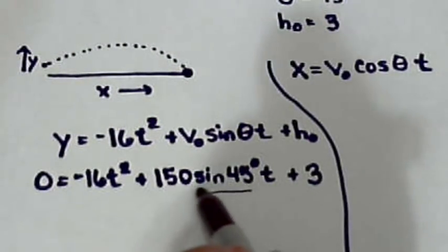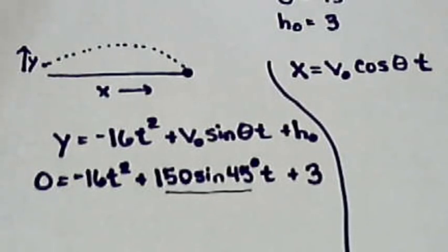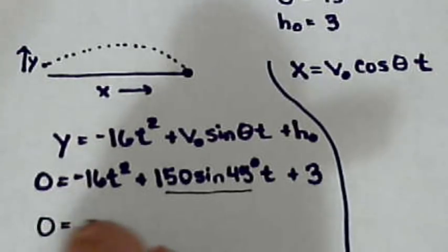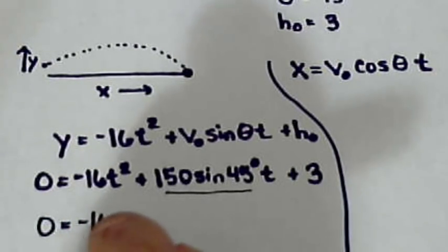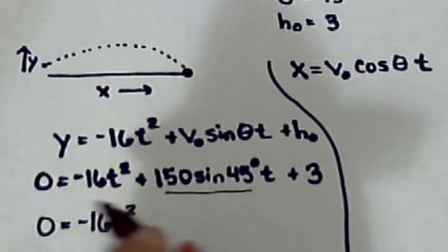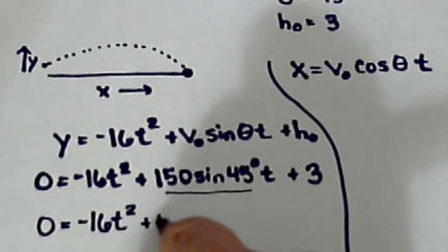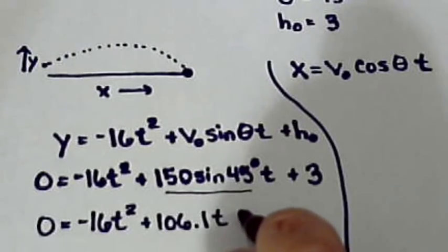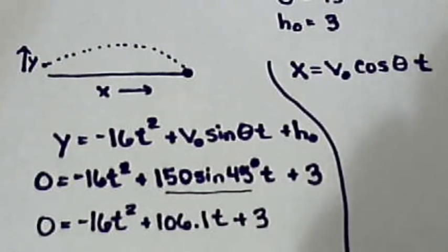Now we can calculate this part here. 150 times sine of 45 is about 106.1. So we've got 0 equals negative 16 T squared plus 106.1 T plus 3.